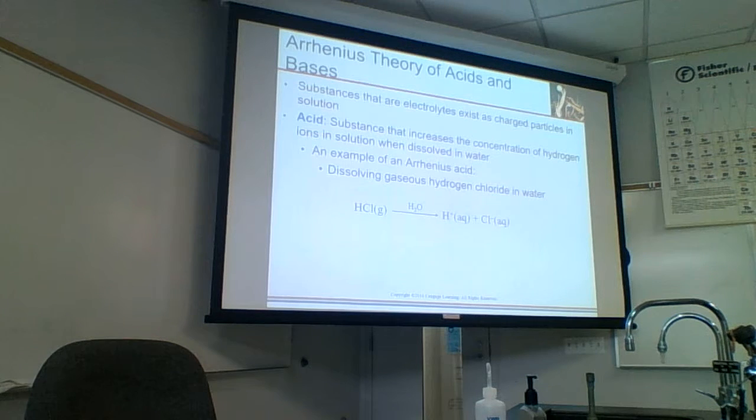In Arrhenius, acids are things that give H-plus in solution, so we expect H-plus from an Arrhenius acid. Arrhenius bases give hydroxide. So Arrhenius is the least comprehensive — therefore we don't spend any time on it. It's too limiting of a definition of acids and bases, historically.